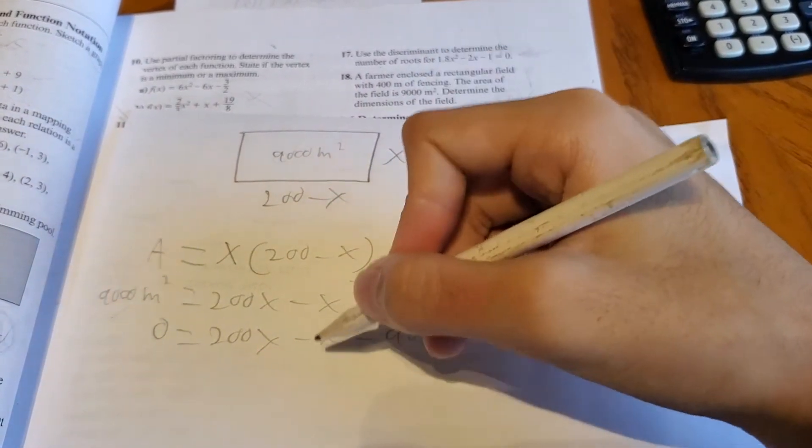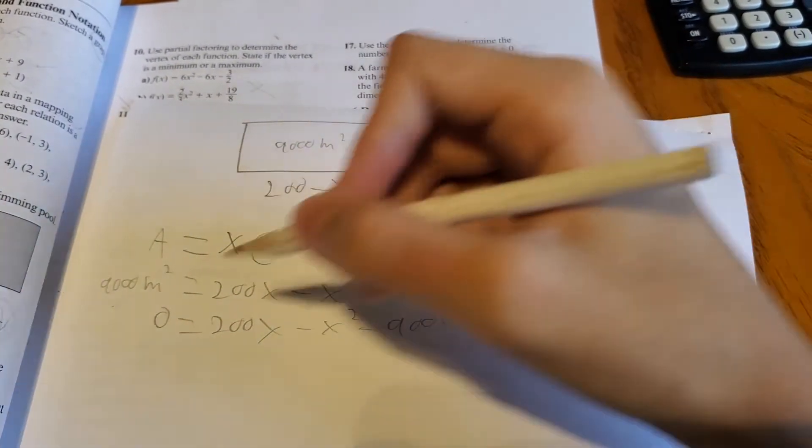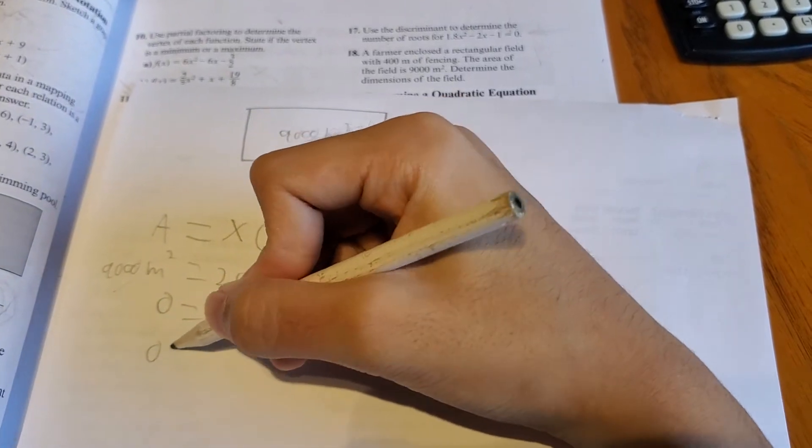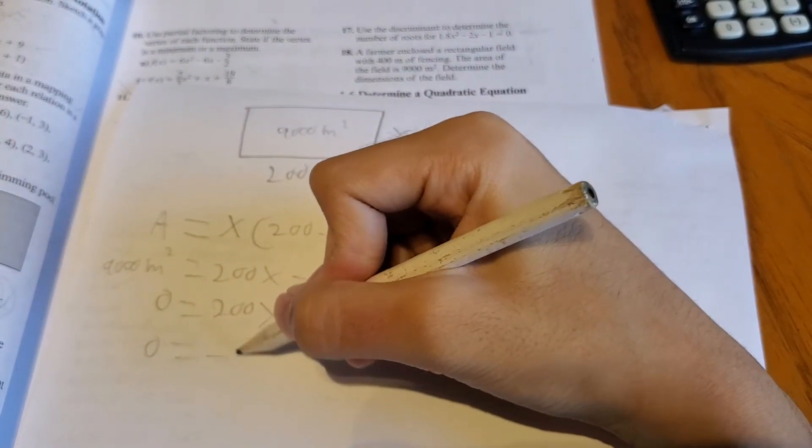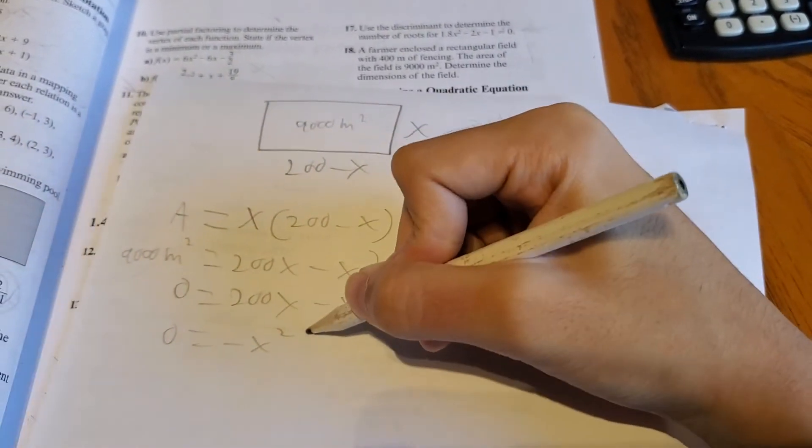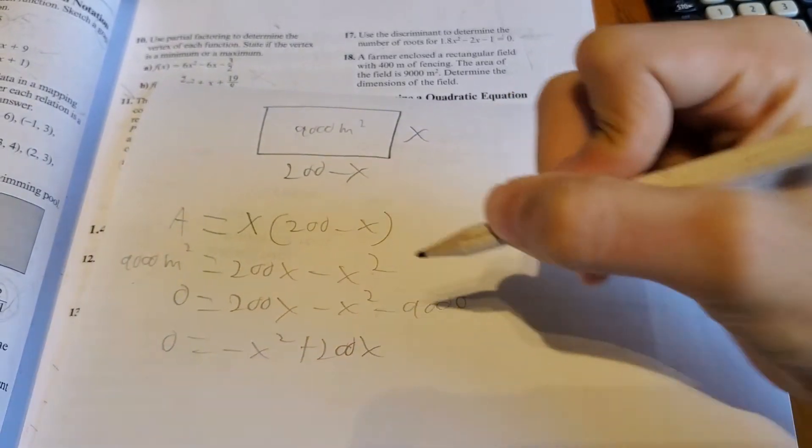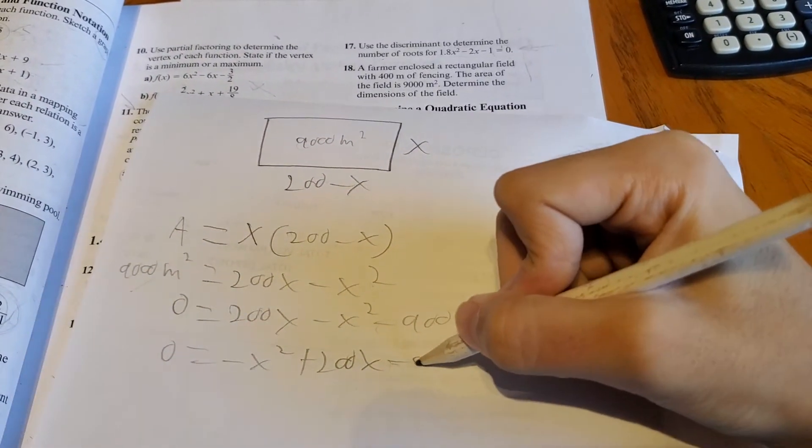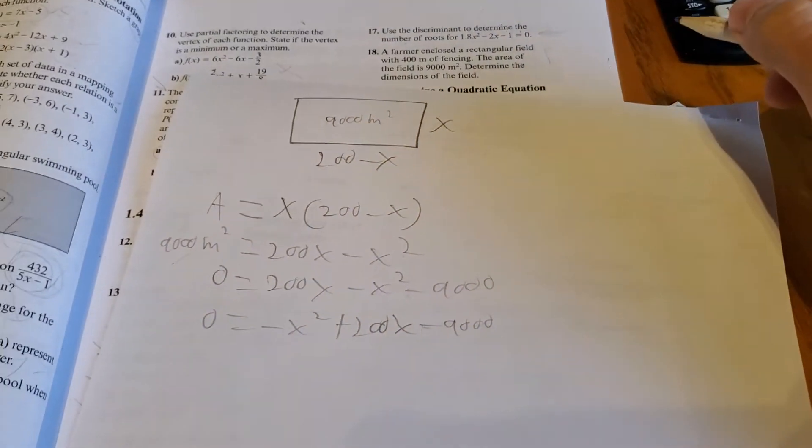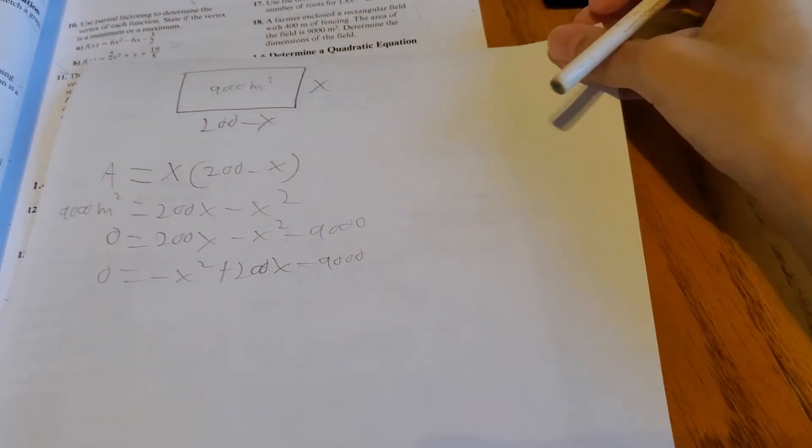And then let's order it from highest degree to lowest degree. 0 equals negative x squared plus 200x and then minus 9,000. So that it's nice and organized.